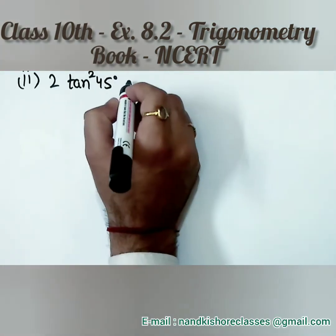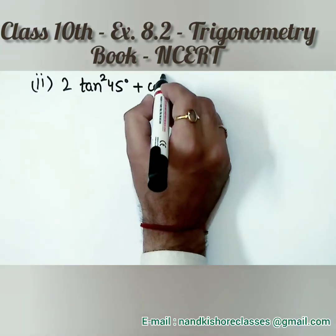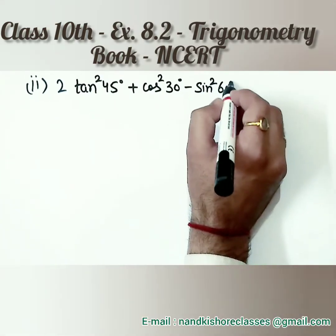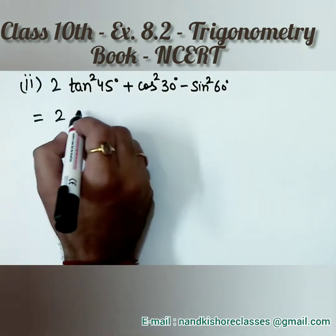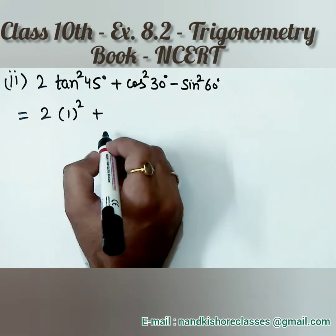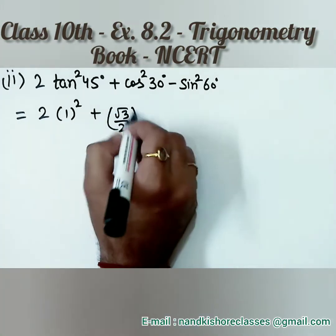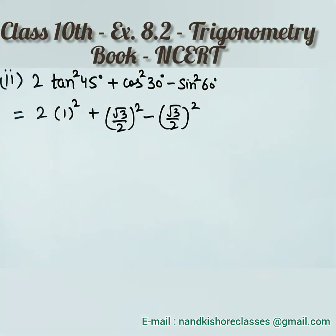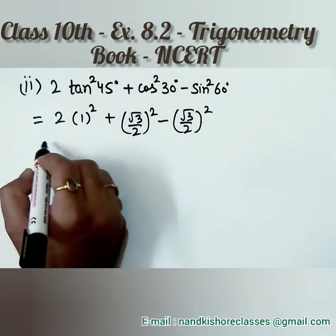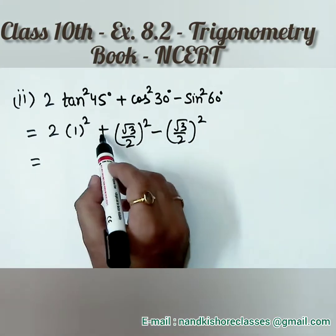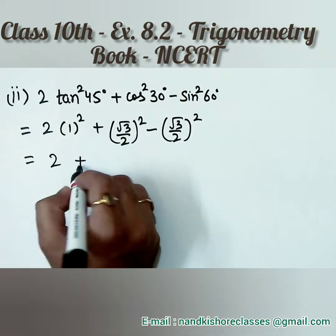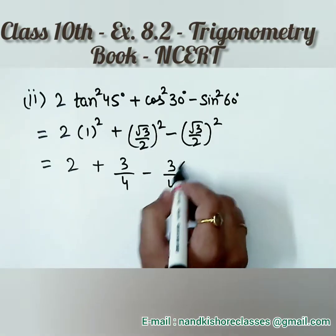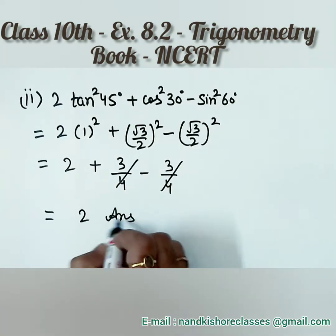Part 2: 2 times tan²45° + cos²30° − sin²60°. The value of tan 45 is 1, cos 30 is root 3 by 2, and sin 60 is root 3 by 2. So we get minus (root 3 by 2)² plus (root 3 by 2)². Those two cancel out. Root 3 squared is 3, 2 squared is 4, and these terms cancel, leaving the final answer as 2.